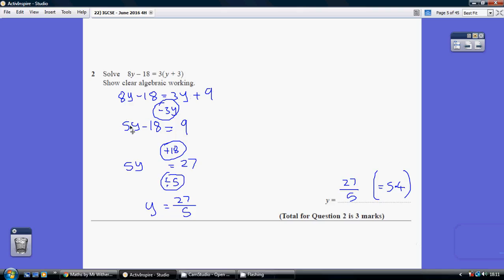So all our y's are on the left, so we want all our normal numbers on the right. So how do we undo a minus 18? We add 18 to both sides. 9 and 18 is 27. 5y equals 27.